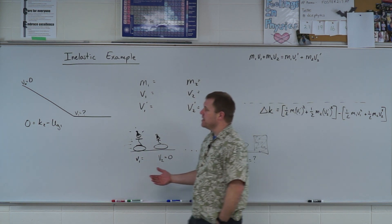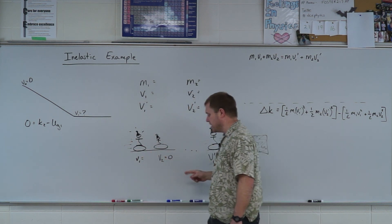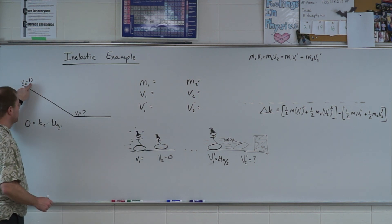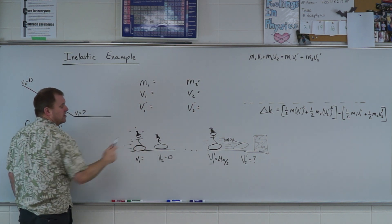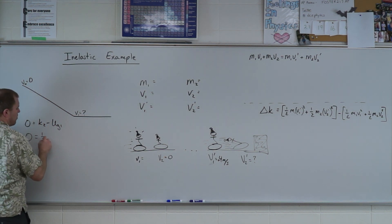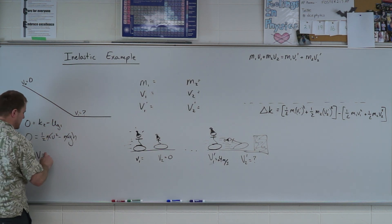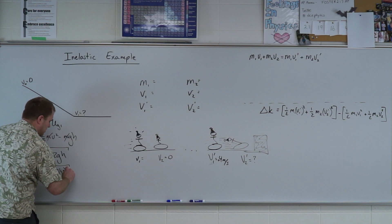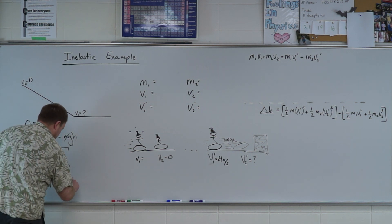This is a two-part problem. First, we need to know how fast you're going at the bottom of the hill so we know how fast you go into that child. We set up a work-kinetic energy theorem problem: gravitational potential energy at the top equals kinetic energy at the bottom. We get zero equals one-half mv² minus mgh. The masses cancel, so v equals the square root of 2gh — the square root of 2 times 9.8 times 5 — giving us the square root of 98, or about 9.9 meters per second.